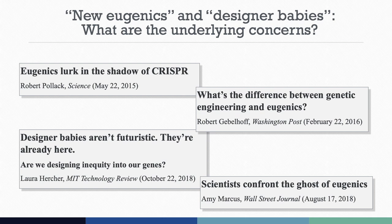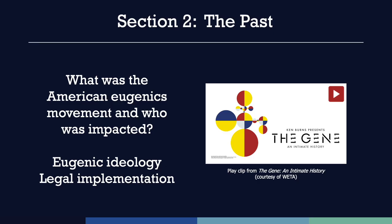While many hope that genetic technologies can help to prevent or treat disease, there are fears as well that the use of genetics, particularly when applied to reproduction, will lead to what is sometimes referred to as the new eugenics and designer babies. These terms are often shorthand to talk about worries that genetics will be used unfairly to discriminate against groups of people, including people with disabilities. Another major fear is that only the wealthy will have access to the newest advances. A look into our history will show that those concerns are well-founded.